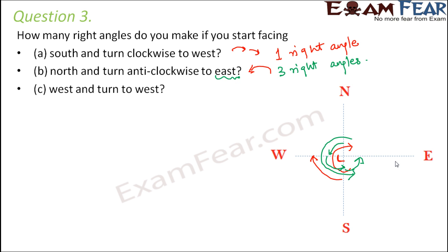Let's look at the third one. You start facing west and turn to west. That means your initial position was towards the west and you have to come back to the same position. Now whenever you have to come back to your starting position, how much rotation do you need to do? So you need to complete one complete revolution. So you start from west, complete 360 degrees and come back. So 360 degrees have how many right angles? One, two, three, and four. So in this case you covered four right angles.